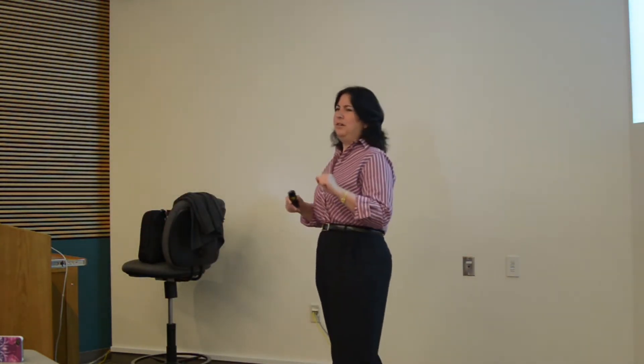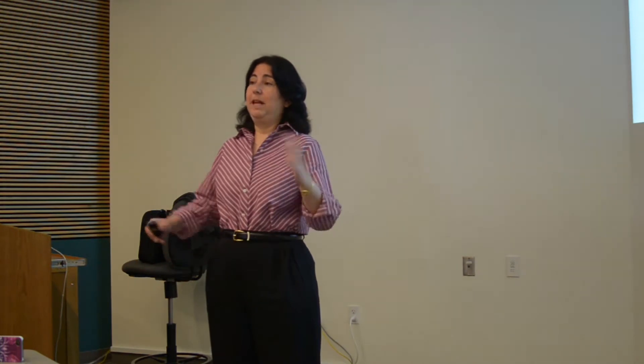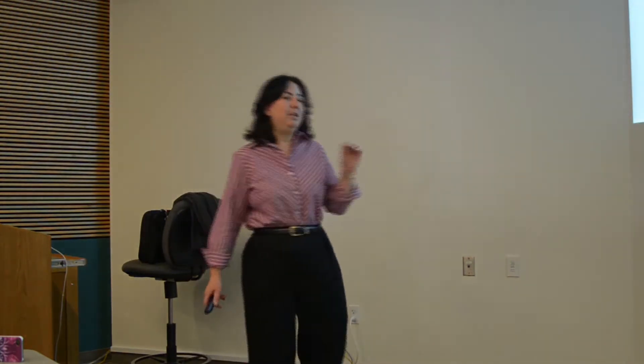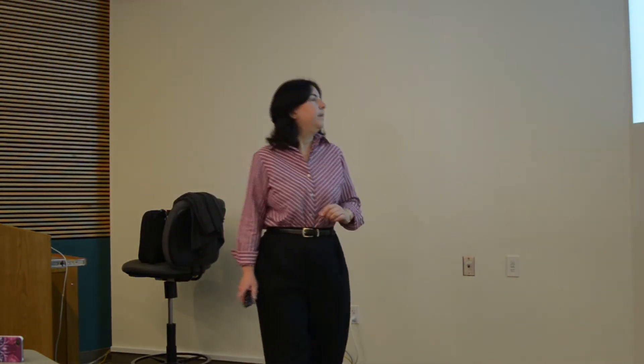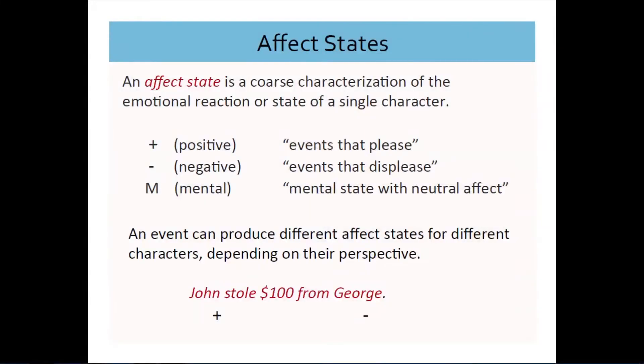At the lowest level are what are called affect states. This work was not meant to do a deep characterization of emotion — it's very simple. Every character is either in a positive state, meaning something happened that is good for the character; a negative state, meaning something happened that's bad for the character; or a neutral state. The neutral states relevant here are what's called a mental state, which represents that the character has a plan or goal to achieve something. An important thing to keep in mind is that a single event can produce different affect states for different characters, because it can affect them in different ways.